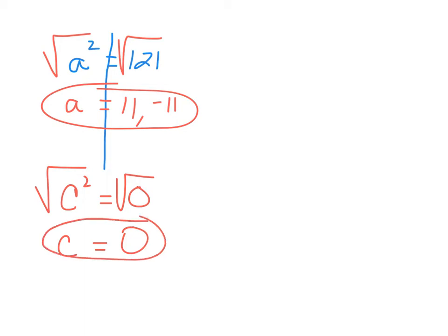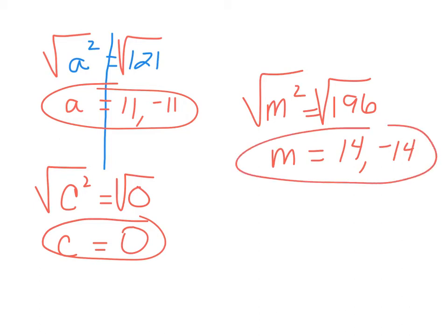Alright. And just to do one other equation, let's say that we have m squared equals 196. Again, to show your work, you want to square root both sides. The square root of m squared becomes m. Copy down the equal sign. And what number times itself gives you 196? That is going to be 14. But it's also going to be negative 14. Alright. And then you're done.